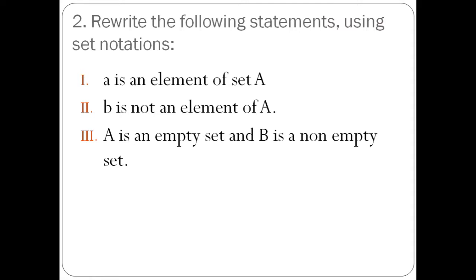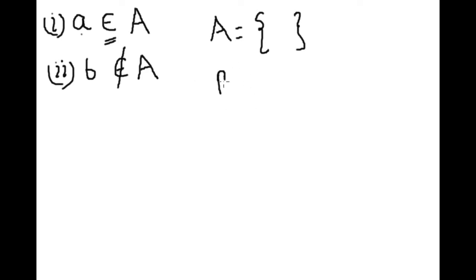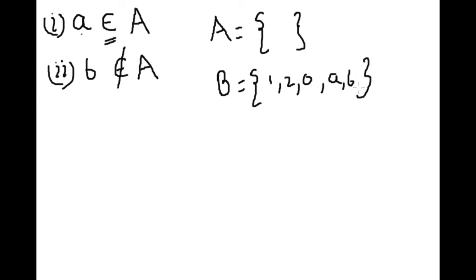Part (c): 'A is an empty set but B is a non-empty set'. Let's say A is an empty set — it means there is nothing, not even zero; it's completely empty. B is a non-empty set, meaning there is something — 1, 2, 0, or anything can be in it. I already made one video on null set and empty set; if you want to watch that, please go to this link.